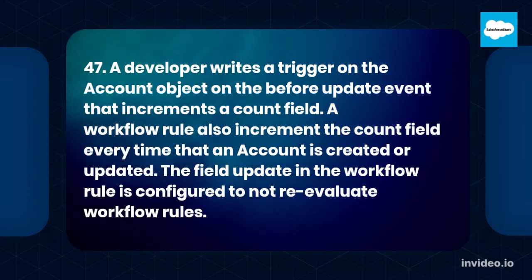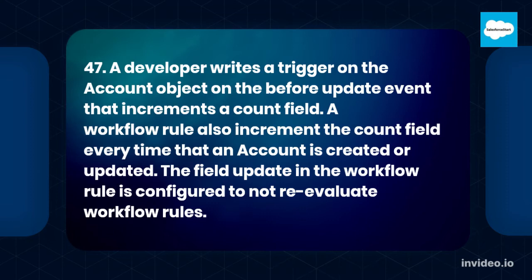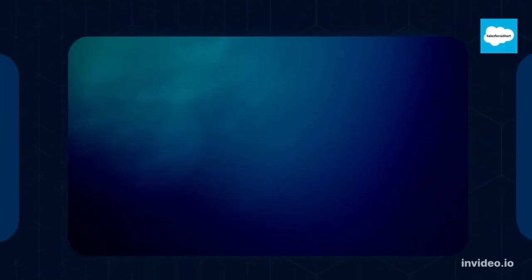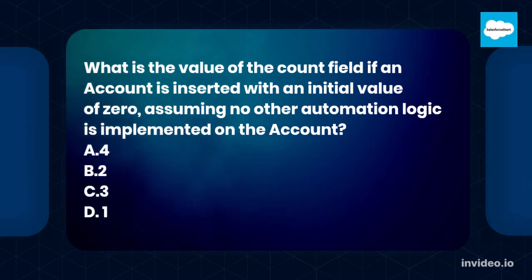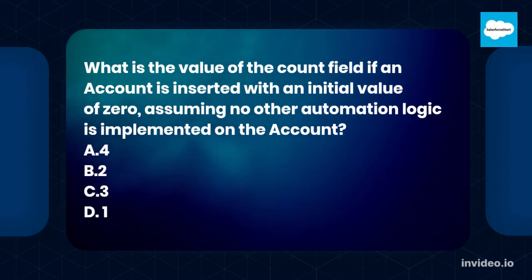Question 47: A developer writes a trigger on the account object on the before update event that increments an account field. A workflow rule also increments the count field every time an account is created or updated. The field update in the workflow rule is configured to not re-evaluate workflow rules. What is the value of the count field if an account is inserted with an initial value of 0, assuming no other automation logic is implemented on the account? A. 4  B. 2  C. 3  D. 1